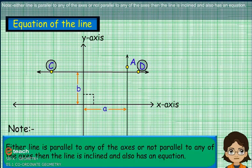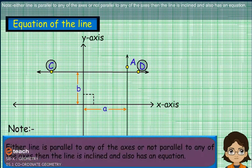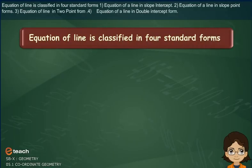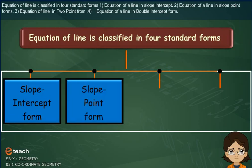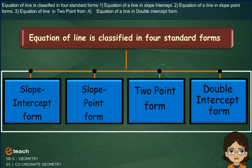Note: whether a line is parallel to the x-axis or not, the line is inclined and also has an equation. The equation of a line is classified in four standard forms: First, equation of line in slope-intercept form. Second, equation of line in slope-point form. Third, equation of line in two-point form. Fourth, equation of line in double-intercept form.